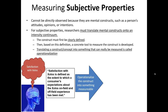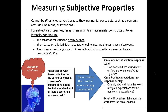Now we can operationalize it. In this particular example, we've operationalized it using two questionnaire items: On a five-point satisfaction scale, how satisfied are you with the on-field performance of Club TJ? And on a five-point expectations-met response scale, overall, how well have the Xolos met your expectations for the home game experience? Then our scoring procedure says take the average score from the two questions. We did operationalize this construct into something concretely measurable — but that doesn't necessarily mean we've done it correctly.